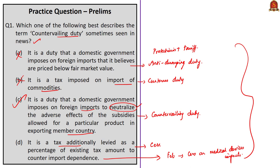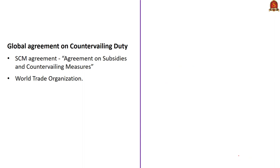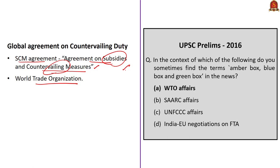When we speak about countervailing duty at the global level, there is an agreement under the World Trade Organization called the SCM Agreement, or the Agreement on Subsidies and Countervailing Measures. This agreement covers two topics: subsidies and countervailing measures. Try to know about this SCM Agreement — even for global level agreements, you get questions in UPSC prelims in simple formats. For example, in 2016 prelims there was a question on amber box, blue box, and green box subsidies — which international organization are they related to? The correct answer was WTO. Always be clear with the basic concepts behind economic topics.